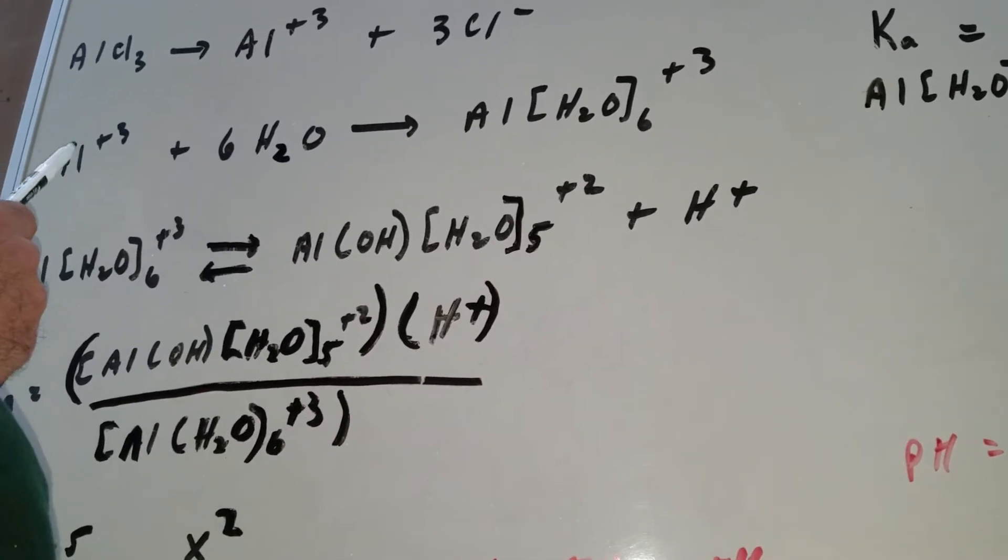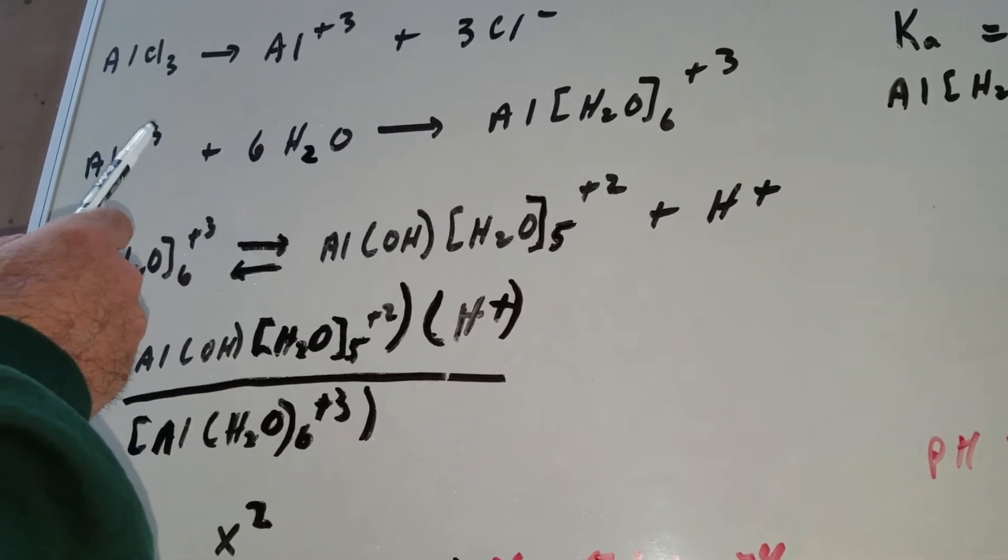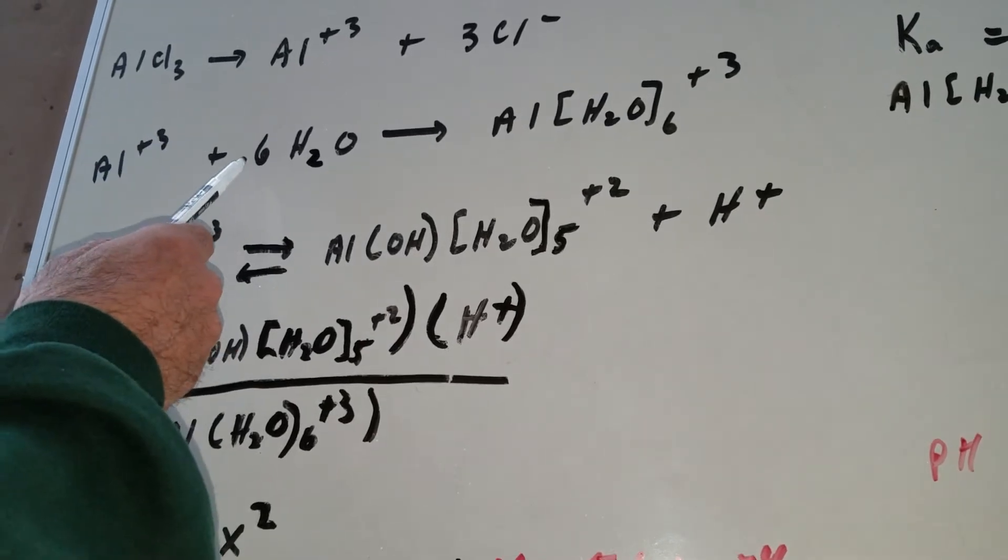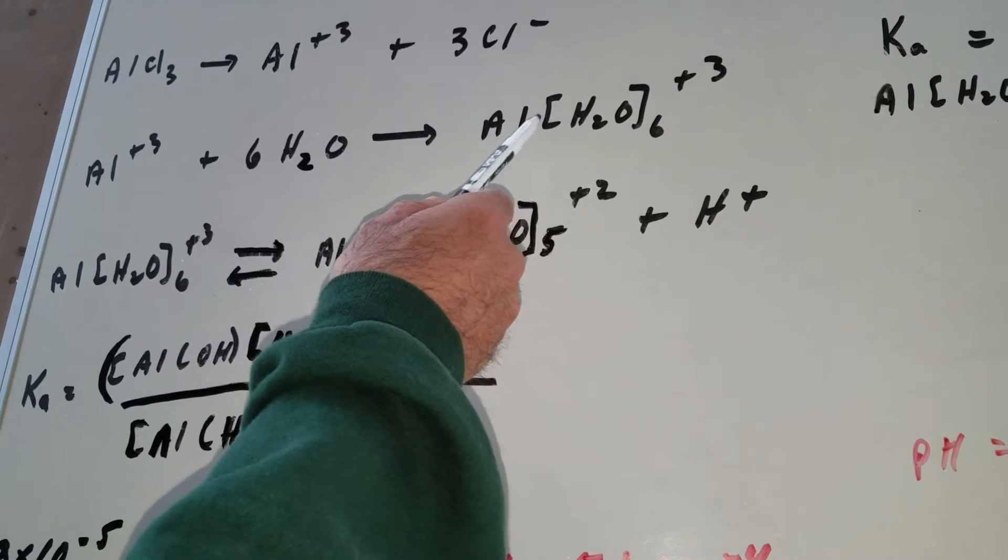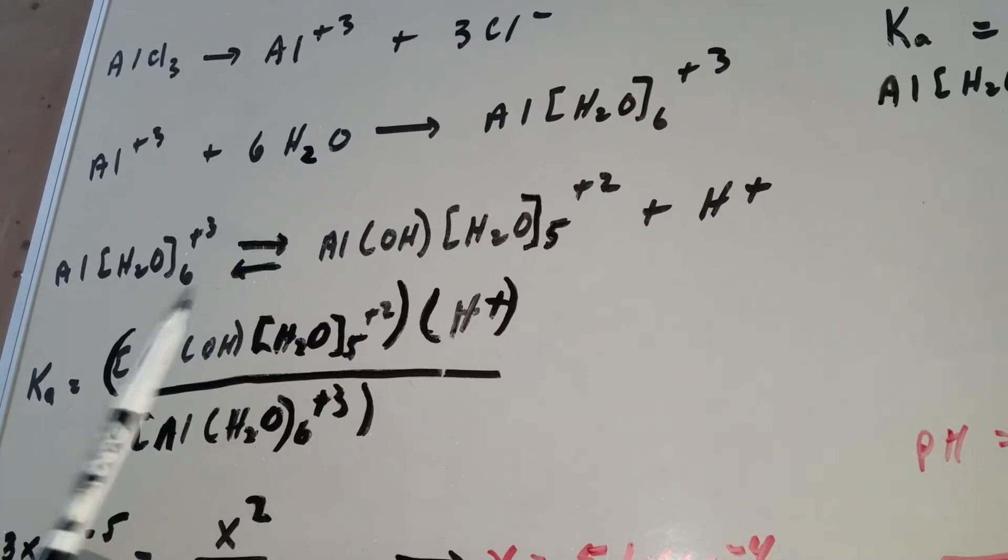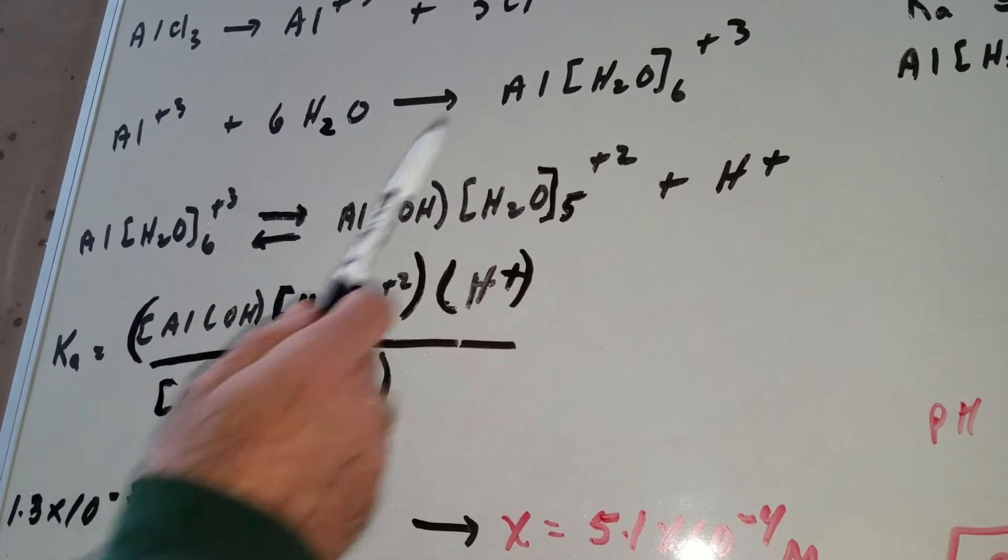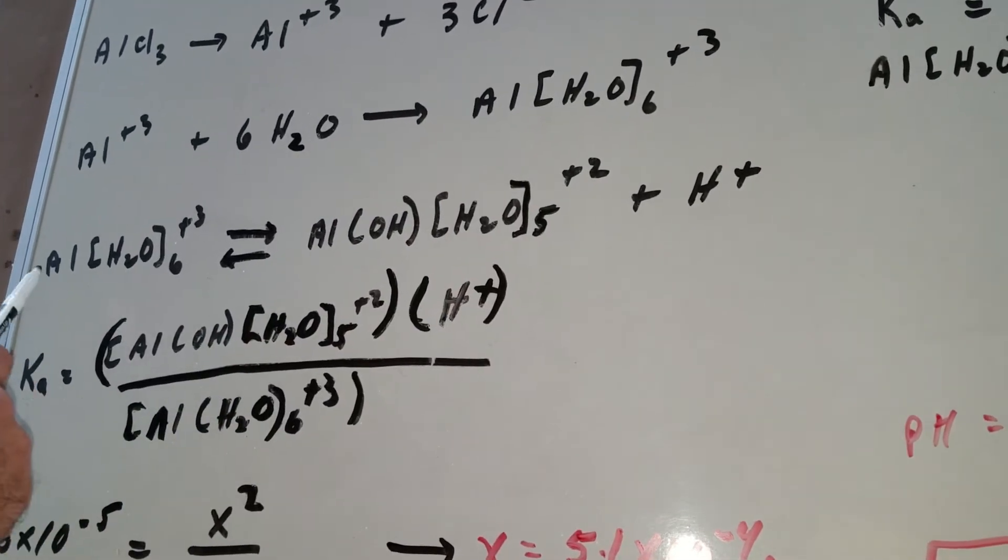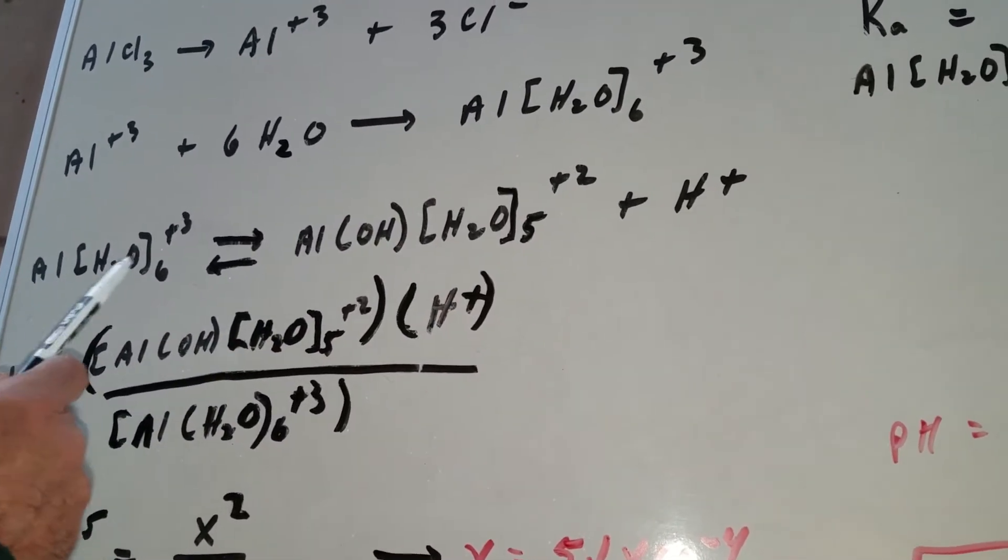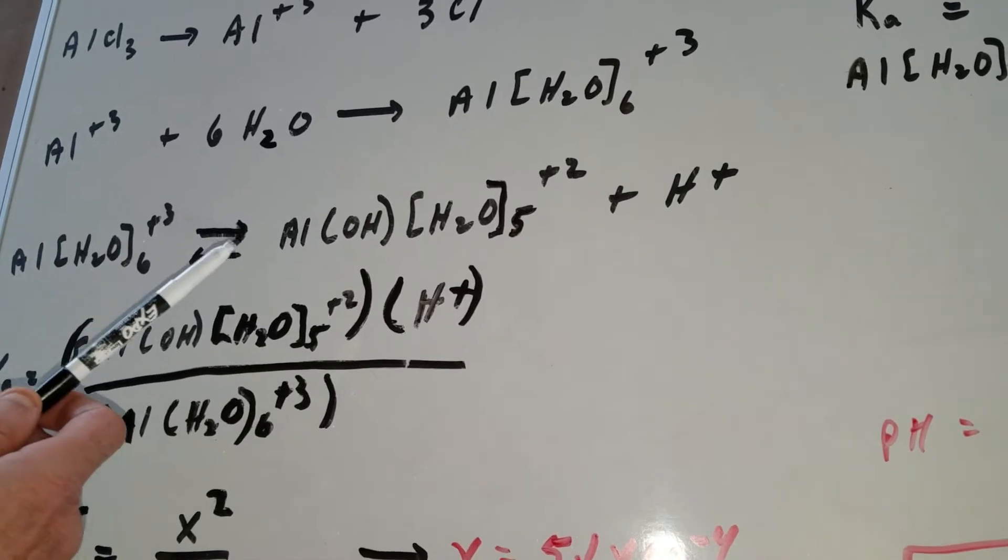So you're going to take aluminum plus three. And since the Ka tells you there's six waters, you put a six in front of it and you form the aluminum water six times plus three complex. Now, once you form the hydrated aluminum complex, all we're going to do is treat it like you would normally do an acid-base reaction.